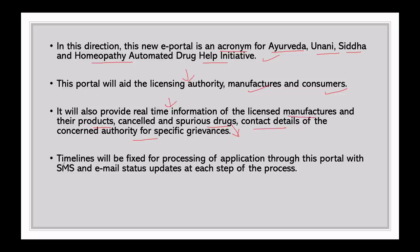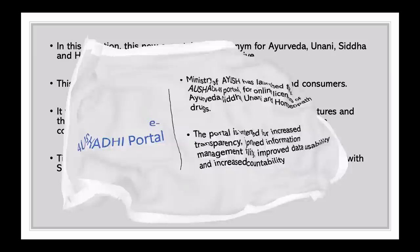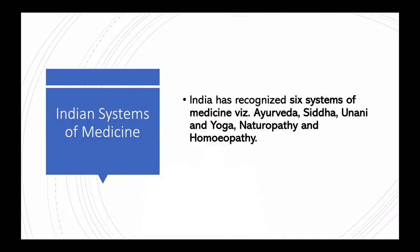For manufacturers who want to obtain a license, it will be a very easy process through this e-portal. Timelines will be fixed for processing of applications, and manufacturers can also track their application status through email or SMS. Overall, it is an endorsing step for the AYUSH department and the Indian system of medicines.